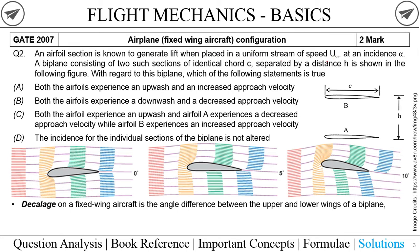The question continues: 'A biplane consisting of two such sections of identical chord c, separated by distance h, is shown in the figure. With regards to the biplane, which of the following statements are true?' They are describing a biplane configuration with the same airfoil and chord, two wing sections separated by distance h, placed in a uniform velocity stream. The question asks about the true statement for this configuration.